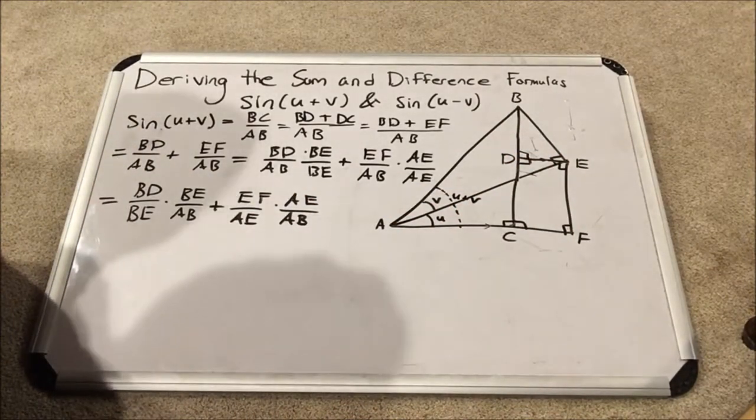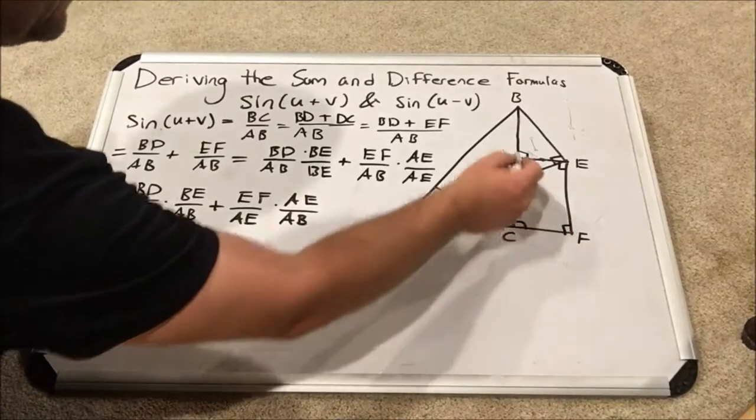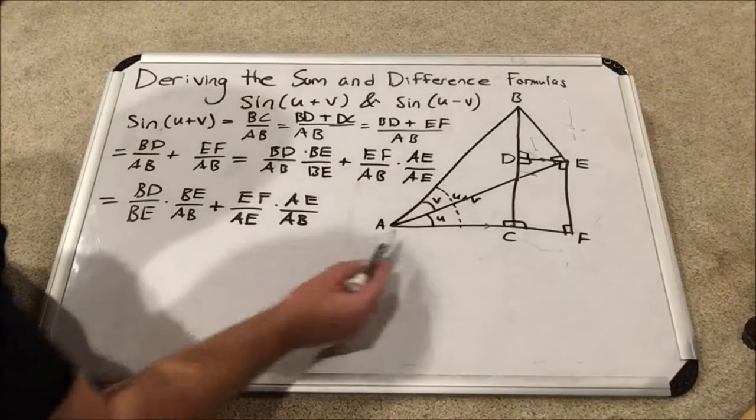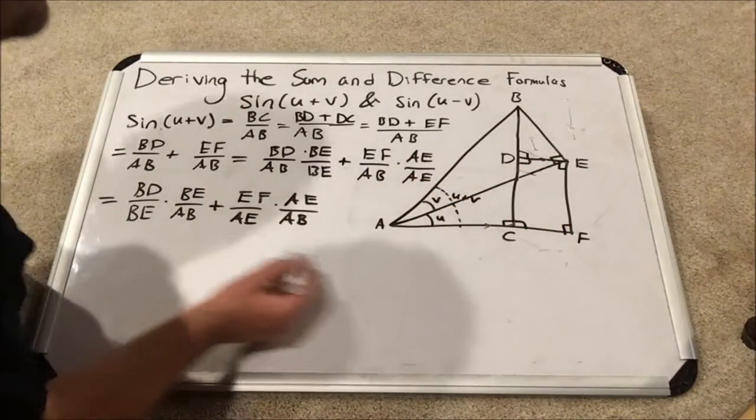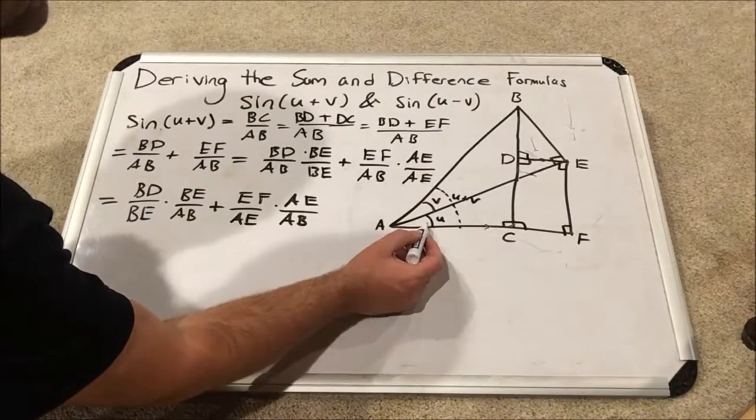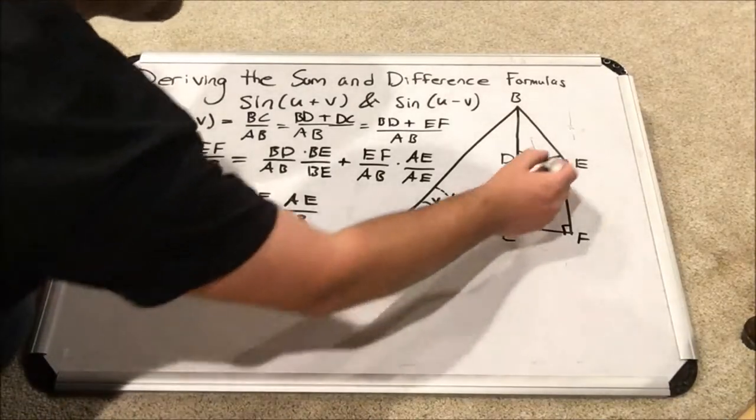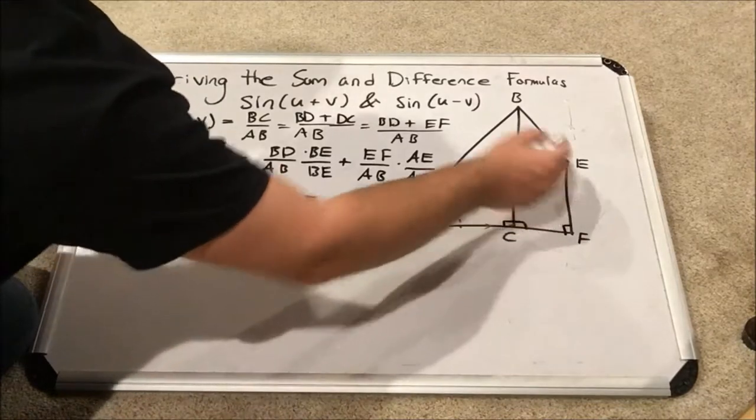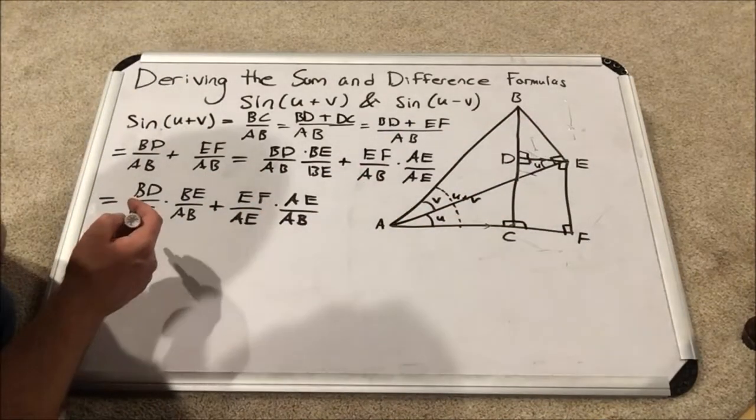What this means by the alternate interior angles theorem, if you look at side AE, that is another transversal for these two parallel lines. Thus, by alternate interior angles theorem, angle U is here, but it must also be here. This angle right here is also U.